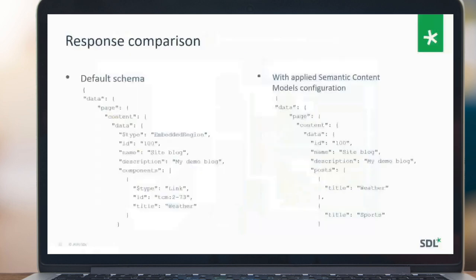Here is a simple comparison: if you use the default schema, the page root query returns all components with all fields — IDs, titles, types, and so on. Instead, by applying a semantic content model configuration, you can get something clean like Posts with just the corresponding title. This makes it much easier for developers to connect directly to the relevant data and link it to the proper part of the application.